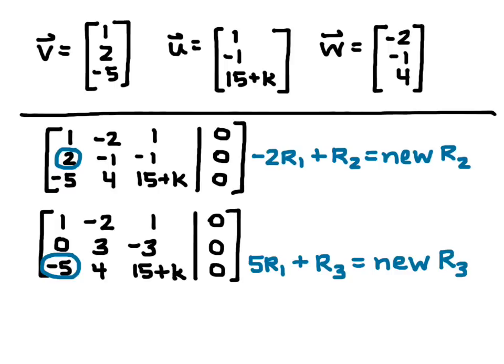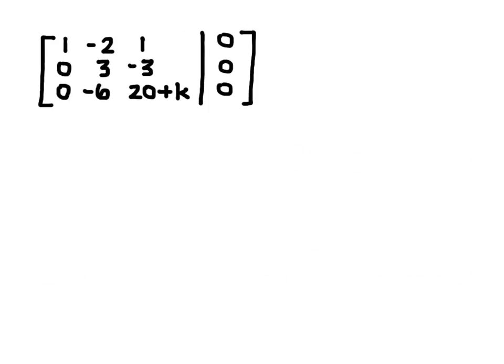Now I want to get rid of the negative 5 in column 1, row 3. So I do 5 row 1 plus row 3 equals the new row 3. Again, you can pause and do the calculation. Now that you've done the calculation, you get the new matrix with row 3 being 0, negative 6, 20 plus K, and 0.